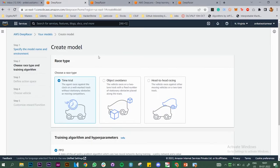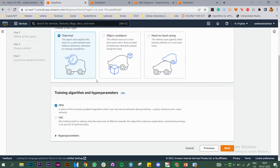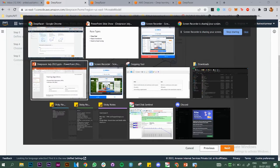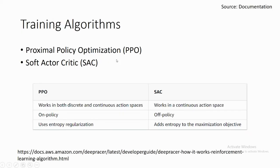Click Next. As I said, there are three race types — we'll go with time trial. There are two algorithms which AWS gives us: Proximal Policy Optimization (PPO) and SAC, which is Soft Actor-Critic. I will be providing the link in the description about these algorithms and I won't be explaining everything, but the important part is understanding the difference between the two.